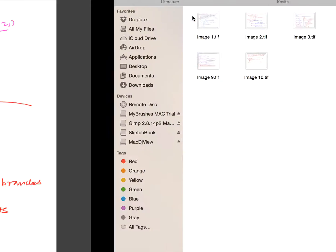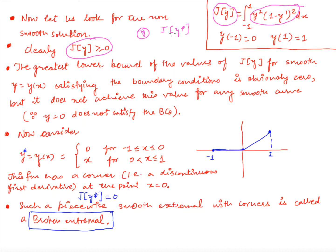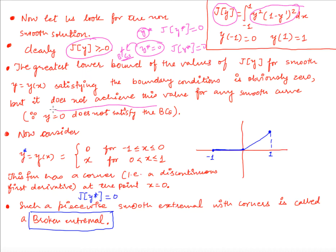Now let's see if we can find a non-smooth extremal for this functional. The integrand is always greater than or equal to 0, so j[y] ≥ 0. If at some y* we can obtain the value of the functional equal to 0, then that will be our extremal. y* = 0 gives a value of 0, but does not satisfy the boundary conditions, so it is ruled out.